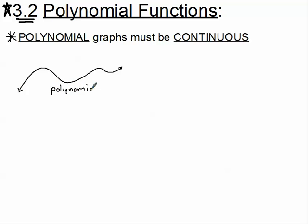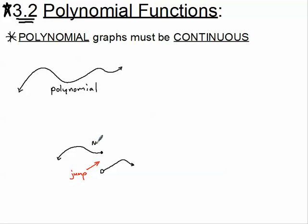Let me give you a couple of examples of a graph that would not be a polynomial. For example, this one is not a polynomial — the main reason is because we have a jump right here. This is not continuous because I had to pick up my Promethean pen to draw it.